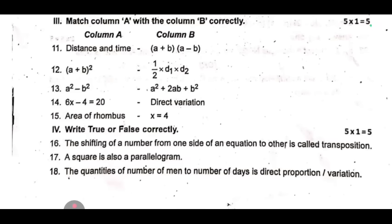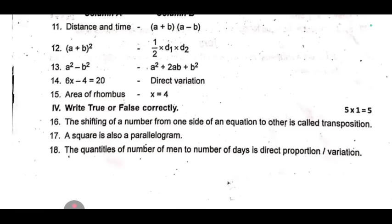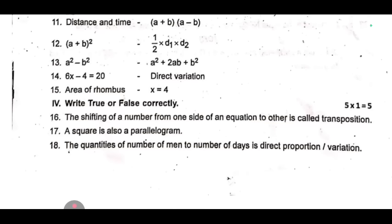Write True or False correctly. 16. The shifting of a number from one side of an equation to other is called transposition. 17. A square is also a parallelogram. 18. The quantities of number of men to number of days is direct proportion or variation.